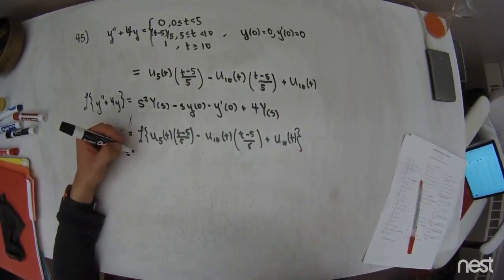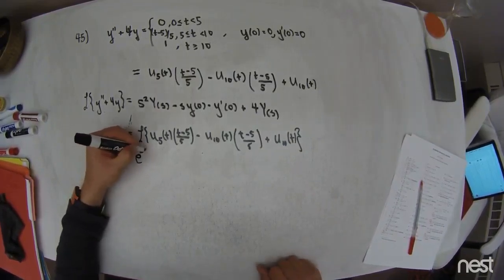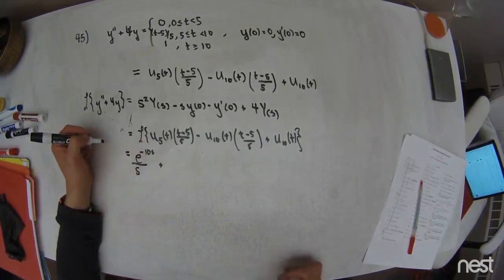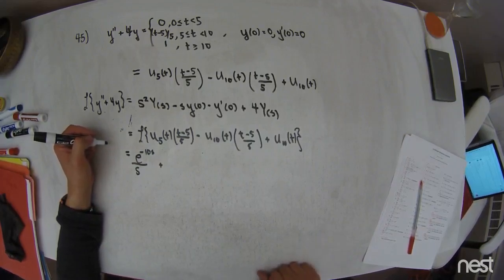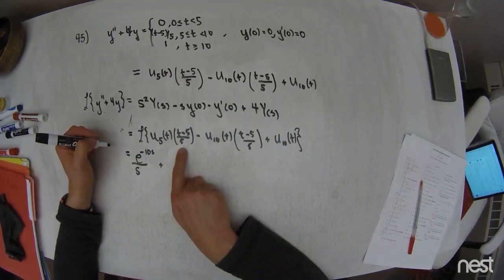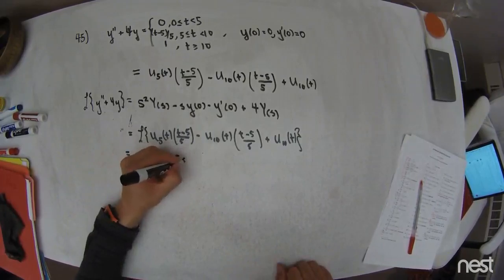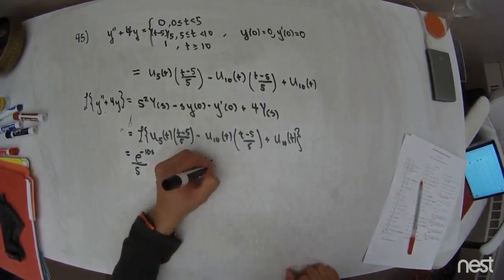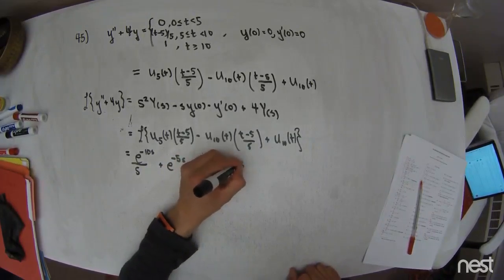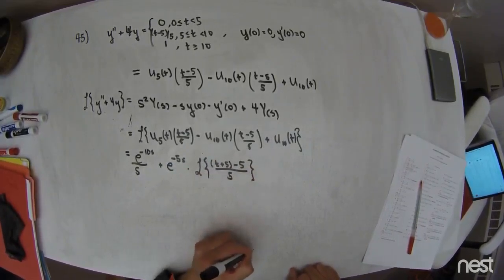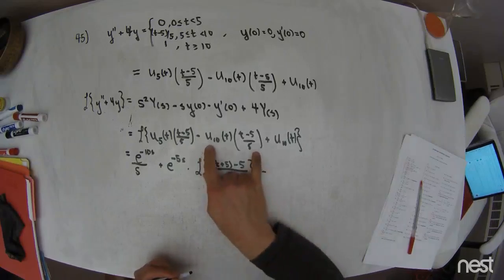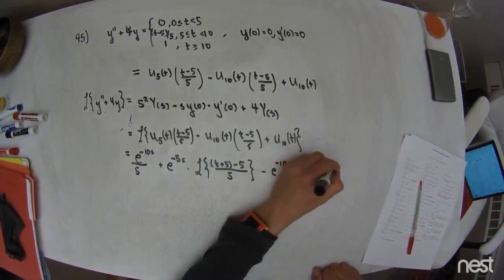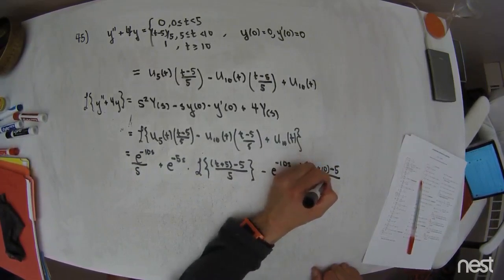I'll take the Laplace transform of u₁₀ first — table entry number 19, on the right-hand side. It's e to the negative time-delay s over s. The other two transforms call for table entry number 5, specifically the alternate form, which says: take the Laplace transform of the step times the other stuff. I identify the time delay as 5, giving e^(−5s), and then take the Laplace transform of (t minus 5)/5 with the time variable shifted forward — i.e., replacing t with t plus the time delay, giving t/5.